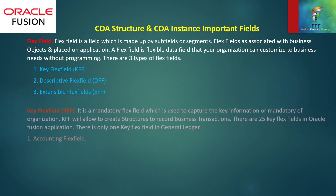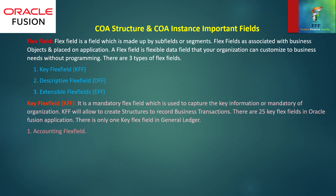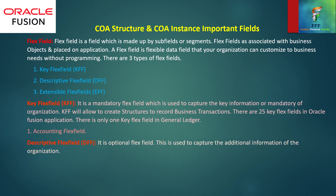and extensible flexi field. Now we have to know about key flexi field. It is a mandatory flexi field which is used to capture the key information or mandatory information of the organization. KFF will allow you to create structures to record business transactions. There are 25 key flexi fields in Oracle Fusion application. There is only one key flexi field in General Ledger, that is the Accounting Flexi Field.